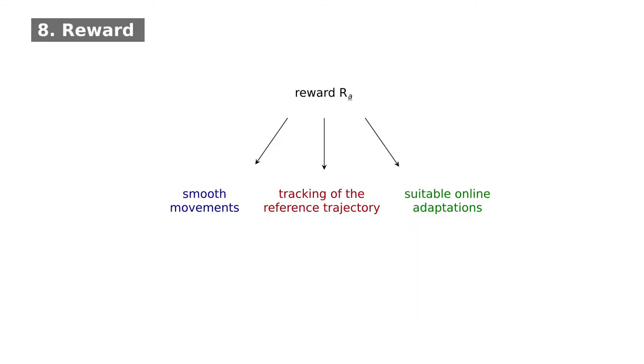To learn well-performing trajectories, a suitable reward definition is needed. In our case, the network should generate smooth trajectories, which roughly follow the reference, but optimize the performance of the desired task. To accomplish all objectives, a task-specific reward is multiplied with a smoothness penalty and a deviation penalty.